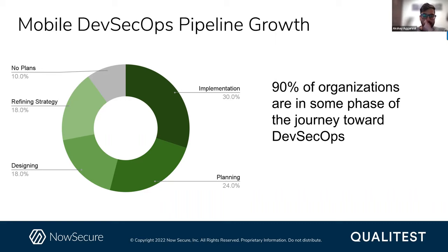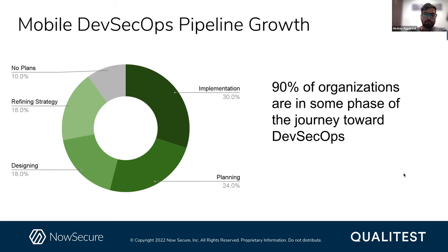DevOps as a culture brought a lot of innovation to software development. However, security was often not able to keep up with the new speed at which code was being produced and released. Although 90% of organizations are in some phase of the journey towards DevSecOps, only 30% of these organizations are actually implementing it. Only 24% are in the planning phase, and 18% are still designing and refining their DevSecOps strategy. It's not that mobile app developers aren't implementing any security measures, but the state of mobile app security is still not strong. Security paired in the process through automation is the way forward.